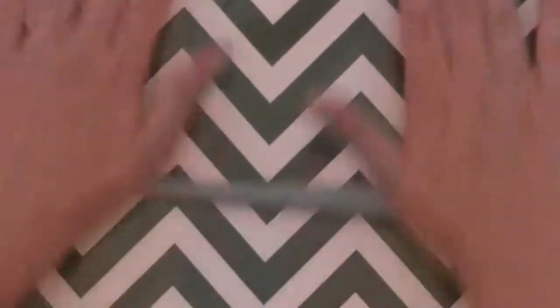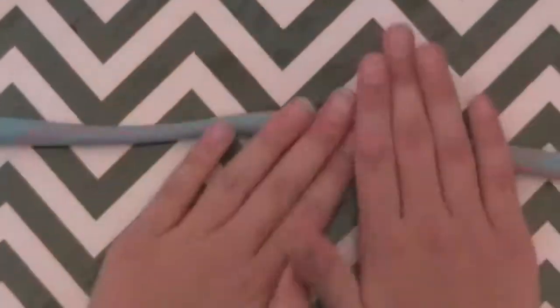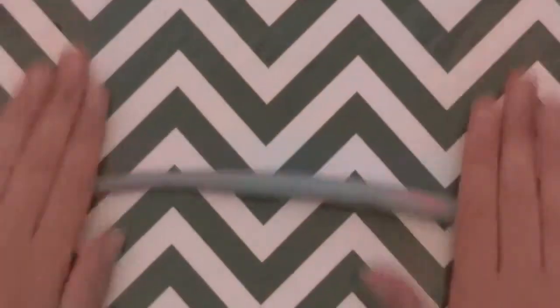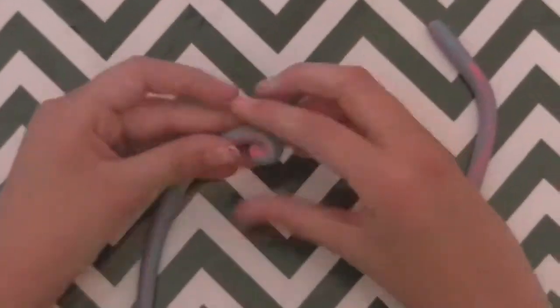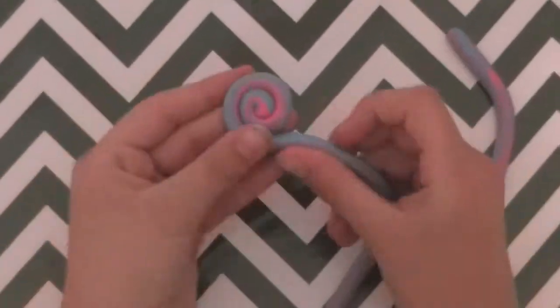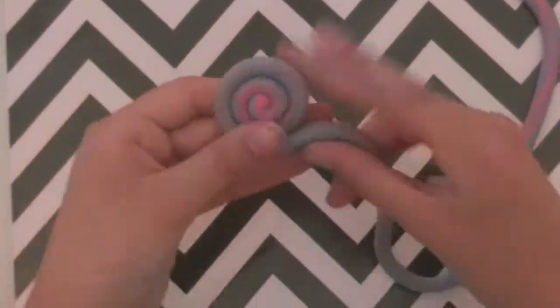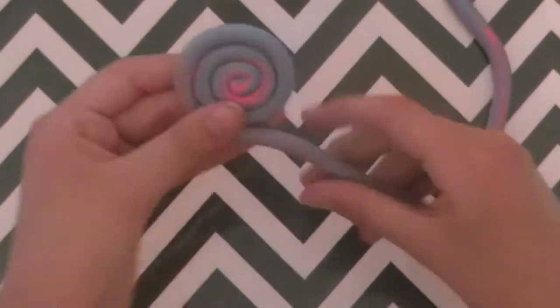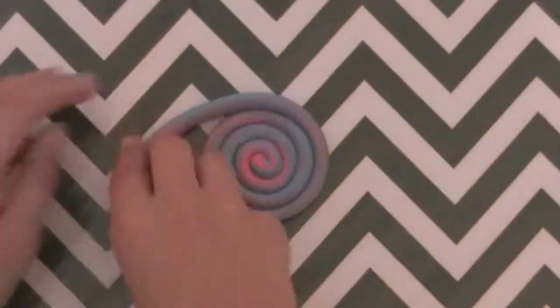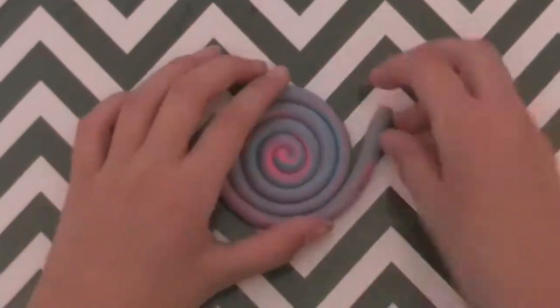After you have mushed all your clay together, now you have to roll it into a giant snake. And by the way, I got my clay from Michael's, and it is Sculpey clay. So after you've rolled it up into a snake, now you're just going to roll it up into a spiral-looking shape. And when you're done with that, you just need to take a bowl or your hands and flatten it out.